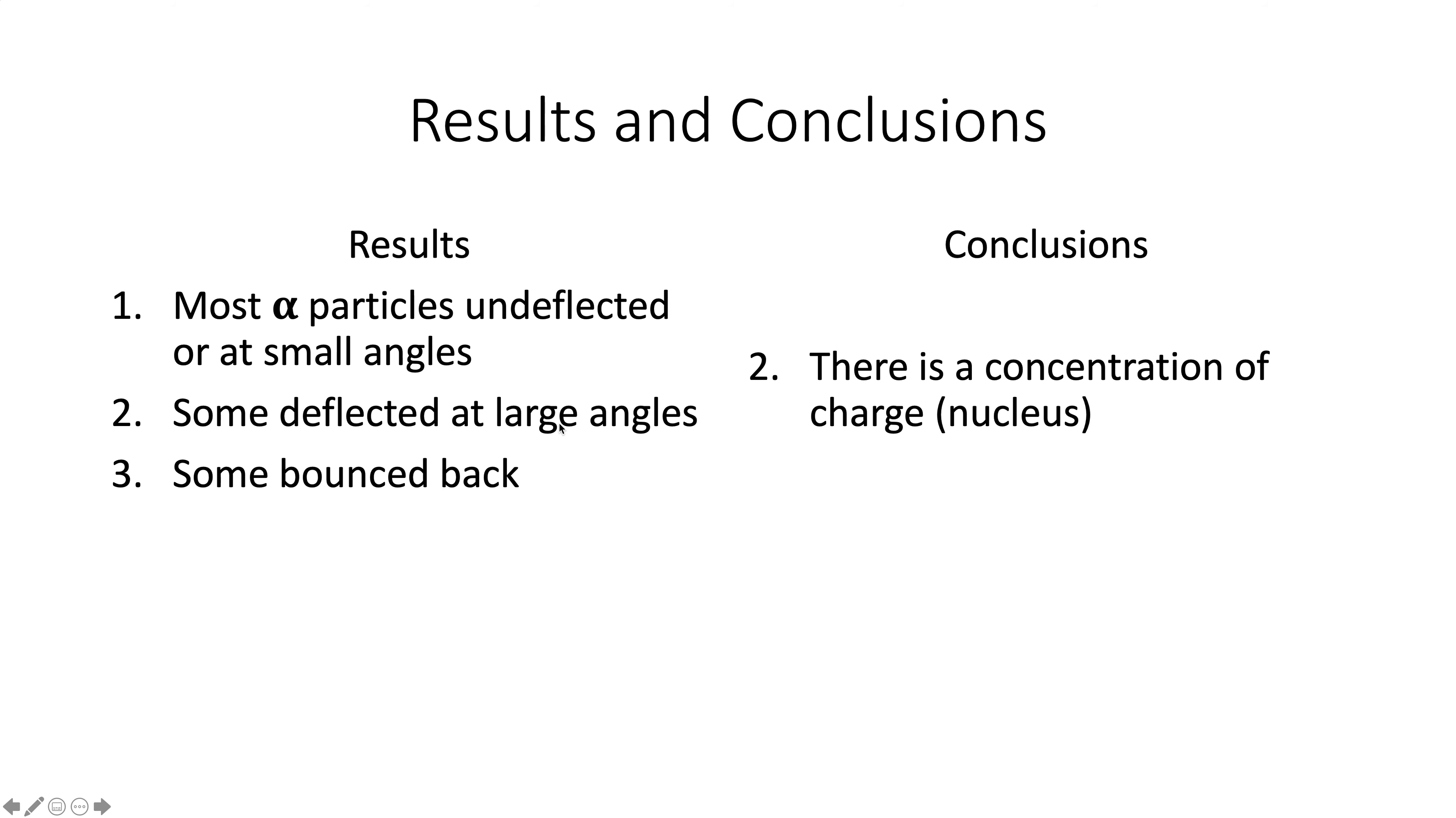If it comes near a big positive, it would get pushed away. So if here's the beam, it would go, and this is the chunk of positive, it would go like that. But there has to be a big chunk of charge because small charges will move it a little bit, big charges will move it a lot. All right, so that's some bounce. Now, this result gave us this conclusion.